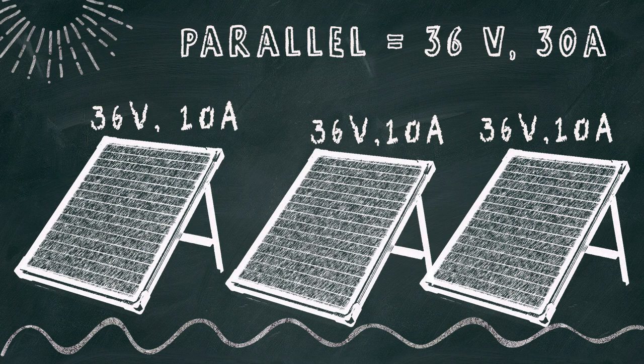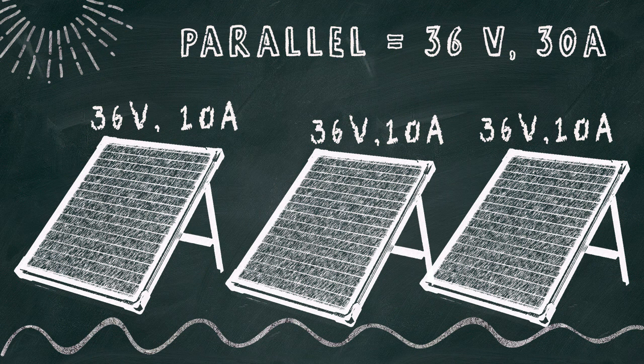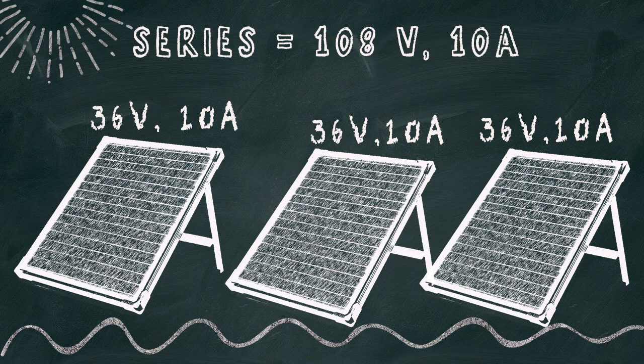Three 360-watt panels of 36 volts and 10 amps generates 36 volts at 30 amps. Total power, a little over a kilowatt. When wired in series, the same three panels produce 108 volts at 10 amps. Power output, a little over a kilowatt.